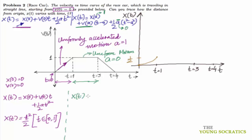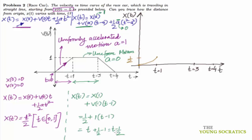So x(t) = x(1) + v(1)·(t − 1) + 0, since acceleration is 0. From the earlier result, x(1) = ½. From the v(t) curve, v(1) = 1. So x(t) = ½ + 1·(t − 1) = t − ½. At t = 1 this gives ½, confirming continuity. The curve from t = 1 to t = 3 is a straight line, reaching x = 2.5 at t = 3.